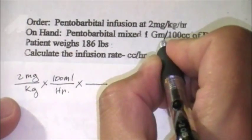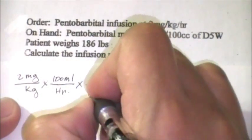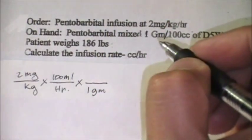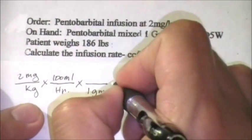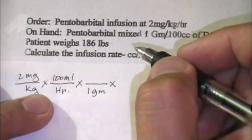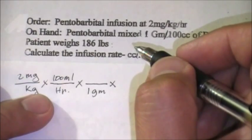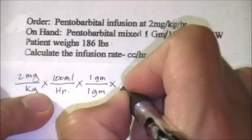Let's put 100 ml and then over 1 gram. 1 gram is how many milligrams?